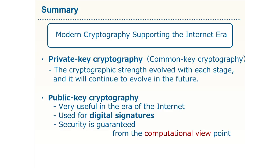Let me summarize this additional topic. We studied modern cryptography briefly, which plays an important role in the internet society. There are two types of cryptography. The standard and conventional one is the private key cryptography, or common key cryptography, which has a long history and its strength has evolved at each stage — we can expect it will continue to evolve in the future. Another one, invented in the 1980s, is the public key cryptography, which is useful in the era of the internet. For example, by using public key cryptography, we can give a signature to a document digitally. We should remember that their security is guaranteed only from a computational viewpoint — their security is based on the computational hardness of cracking.